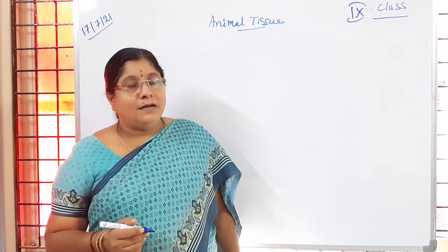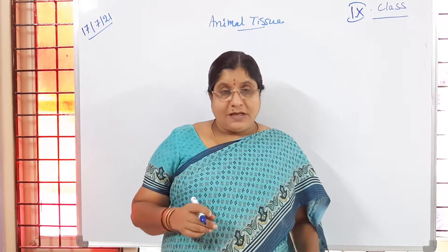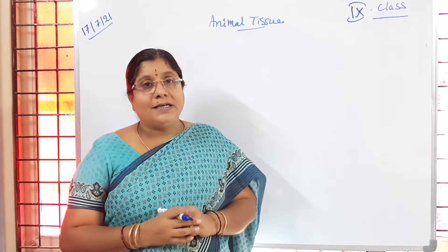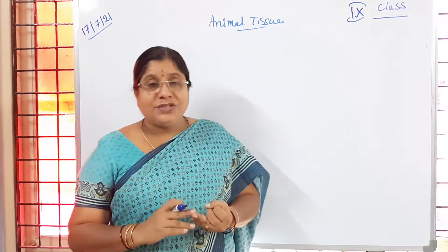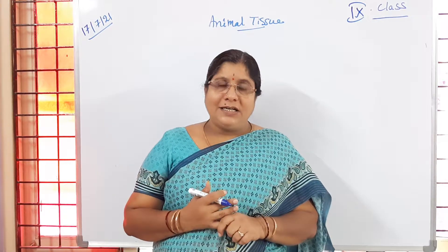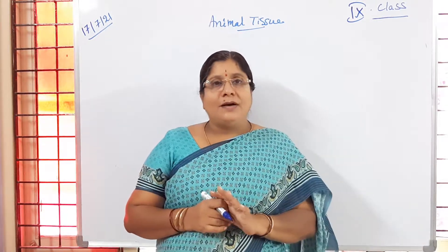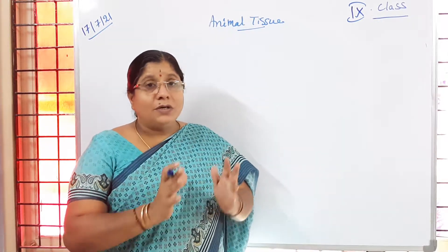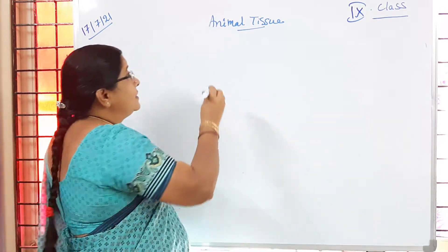Good morning children. In yesterday's class we learnt about muscle tissue and all the other types of connective tissues. We learnt about areolar tissue, adipose tissue, bone, tendon, ligament, and cartilage. We also completed epithelial tissues and nervous tissue. The only component of animal tissues left to cover is blood, which is a component of connective tissue.